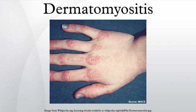Sclerodactyly and psoriasiform changes in the scalp can occur. Centripetal flagellate erythema comprises linear violaceous streaks on the trunk. Calcinosis cutis is usually seen in juvenile dermatomyositis, not adult dermatomyositis. Dysphagia is another feature, occurring in as many as 33% of cases.